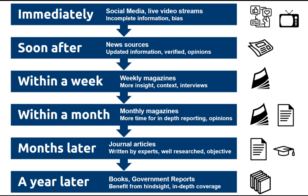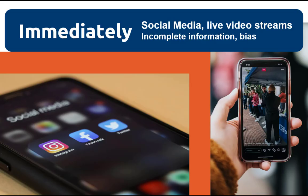Different kinds of information sources are published at different speeds. Consider when an event is first taking place. The first sources of information are released almost immediately as the event is taking place, through social media sources and live video footage. These sources provide the first bits of information on a topic and may contain bias.